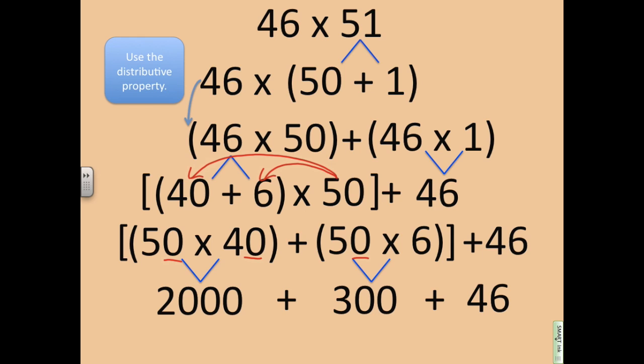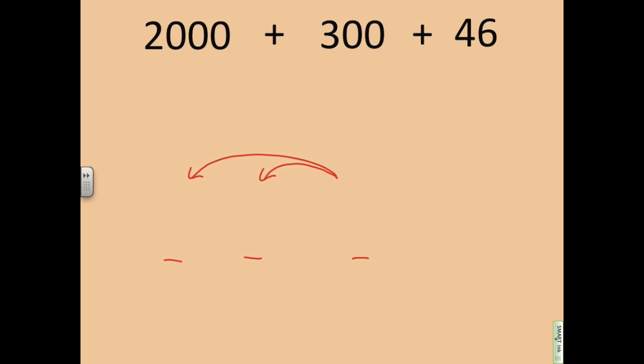I'm going to take this to another slide so that you can continue to see my work. So 2,000 plus 300 plus 46. And now I can just continue to solve it, order of operations, and I'm going to solve it from left to right. 2,000 plus 300 is 2,300 plus 46.